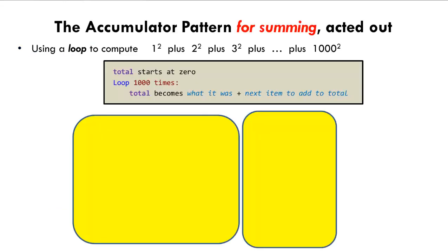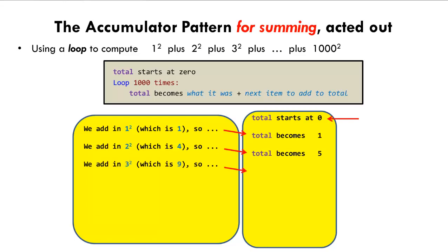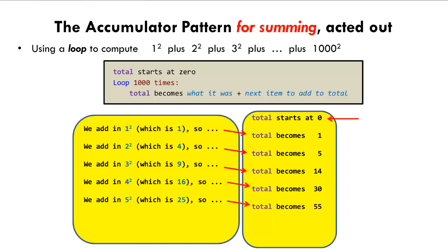Here is the example we used previously for summing. To compute 1 squared plus 2 squared plus 3 squared and so forth through 1000 squared, we use a variable, which we chose to call total. We start our variable total at 0. Then we add in 1 squared, which is 1, so our total becomes 0 plus 1, which is 1. Then we add in 2 squared, which is 4, so our total becomes 1 plus 4, which is 5. Then we add in 3 squared, which is 9, so our total becomes 5 plus 9, which is 14. And so forth until we add in 1000 squared.